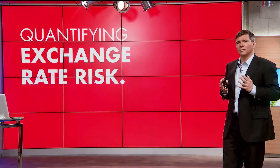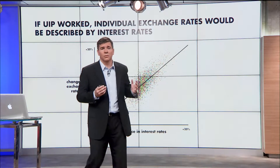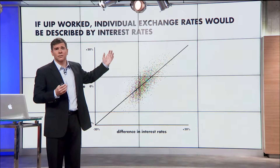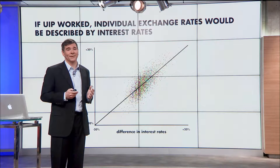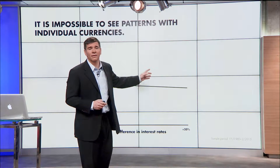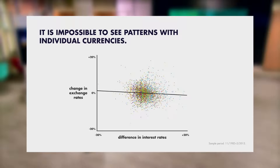If UIP worked, the world would be simple — change in exchange rates would line up with the interest rate differences. But it's not the world we live in. The world we live in: changes in exchange rates do not line up with interest rates. On this graph, each dot is the one-month change in exchange rate, and each color corresponds to a currency. What's the most striking pattern? There's no pattern. Exchange rates look random.